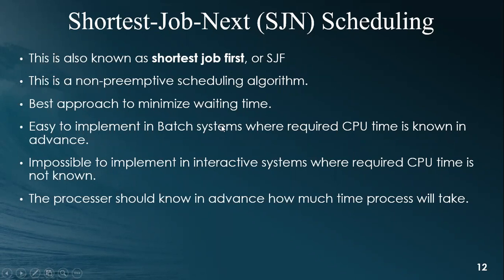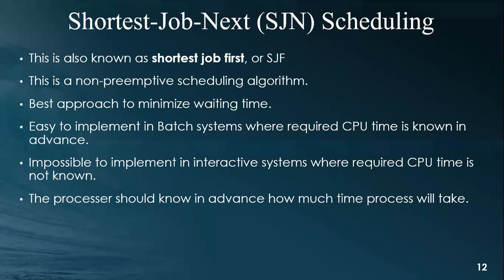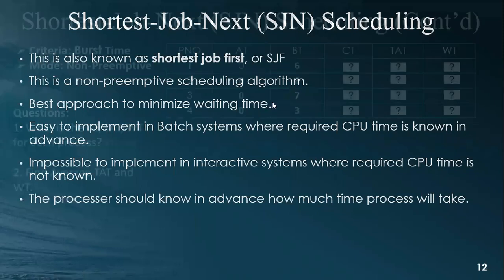In advanced interactive cases, when you don't know how much time a process will take, it is not possible to apply this type of algorithm. The precondition of Shortest Job Next is that you must know the expected burst time for each job — the processor should know in advance how much time each process will take. But if you do know, it is the best approach to minimize waiting time.